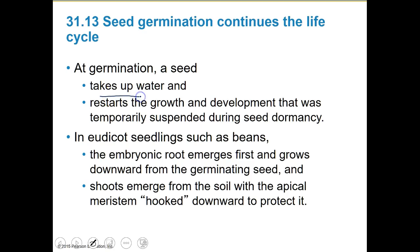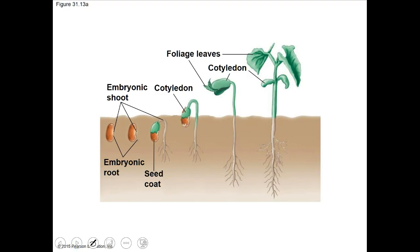Germination: a seed takes up water and restarts the growth and development that was temporarily suspended during dormancy. In eudicot seedlings like beans, the embryonic root emerges first and grows downward. The shoot emerges in a hooked downward shape — it protects the seed going down and will make the stem go up and hooked before making leaves and going out.